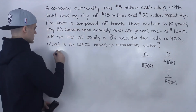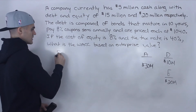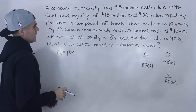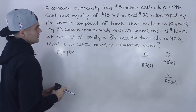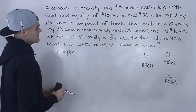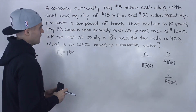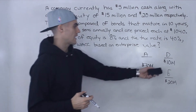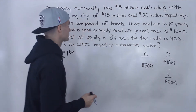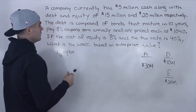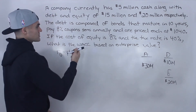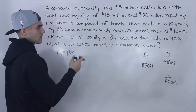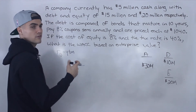What else do we need? We need to find out what the return on debt is, and the return on debt is the yield to maturity. Notice that we are not given the yield to maturity in this case. However, we are given information about the bonds that make up this debt — the bonds mature in 10 years, pay 8% coupon semi-annually, and are priced at $1,040.